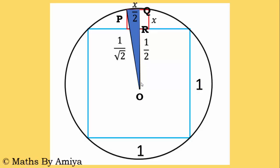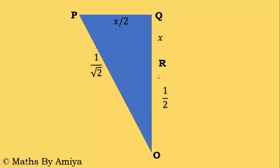I just enlarge the triangle OPQ. OP is 1 by root 2, OR is half, RQ is x, and PQ is x by 2. This is OR which is half, RQ is x, PQ is x by 2, and OP is 1 by root 2.